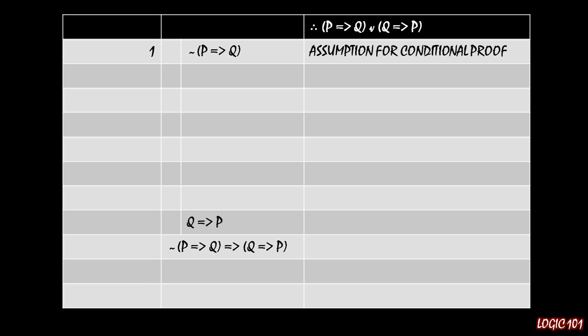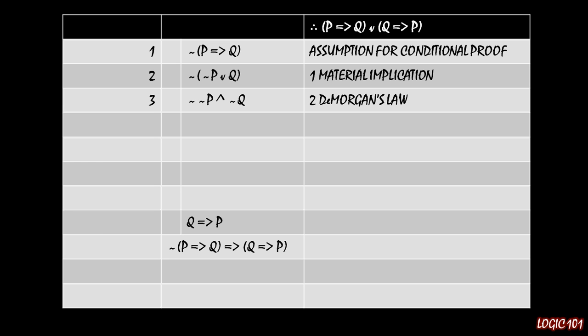A key proof tip: DeMorgan's everything you can. While we can't apply DeMorgan's to conditional statements directly, we can apply it to disjunctions, and we can turn conditional statements into disjunctions through material implication. So applying material implication to line one, we negate the antecedent and turn the conditional into an 'or' statement — purely for the purpose of then applying DeMorgan's. We distribute that negation, turn the disjunction into an 'and,' giving us 'not not P and not Q.' DeMorgan's is your best friend.